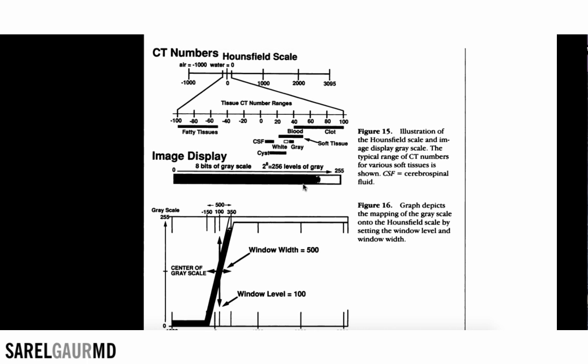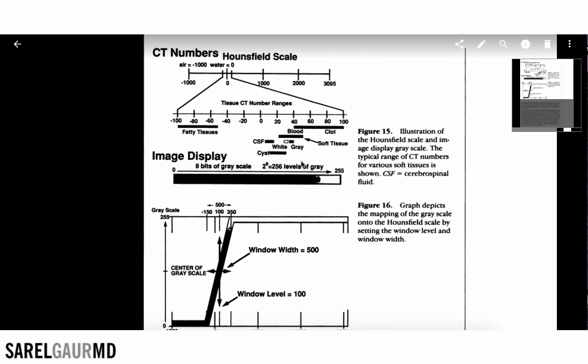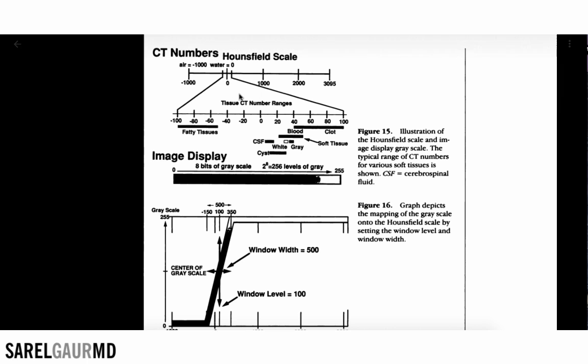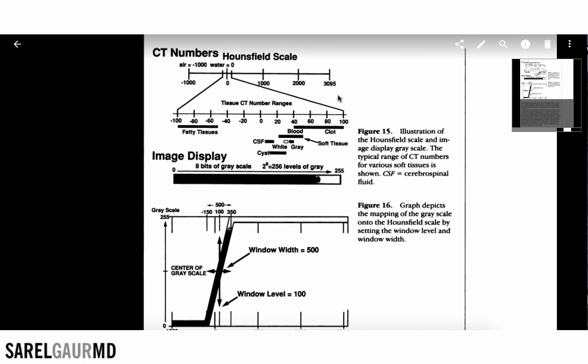Before I start talking about window width and level, I have to take a couple minutes to talk about the Hounsfield scale and its important points. The Hounsfield scale was created by Godfrey Hounsfield — he's the godfather of CT. The range is negative 1,000 to positive 3,095. The zero point is set at the density of water, so everything is relative to the density of water. Air is set at negative 1,000, and positive 3,095 represents the density of cortical bone.